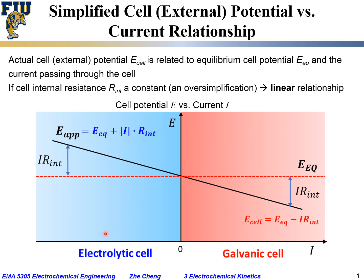Or if you treat current as negative, it will similarly be minus bracket negative current times internal resistance. In electrolytic cell mode, the applied voltage is counter to the equilibrium cell potential but must be larger in absolute value. In this case, we spend electrical energy from a separate power source to drive chemical changes in the electrochemical cell and store at least part of that electrical energy.